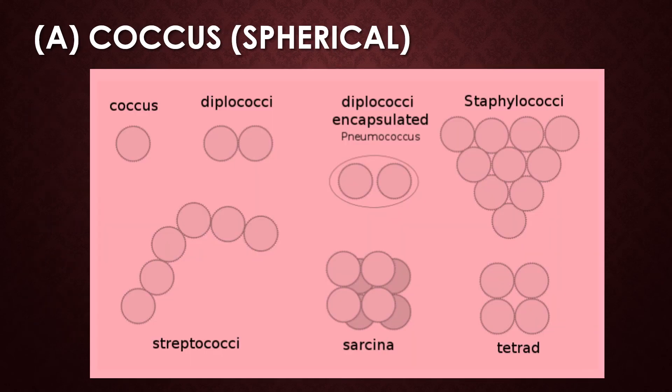Bacteria are available in different shapes. The first shape is coccus shape, that is a spherical shape. Under the coccus shape, nearly six types of arrangements are available. They are: diplococci, diplococci encapsulated, staphylococci, streptococci, sarcina, and tetrad.